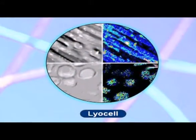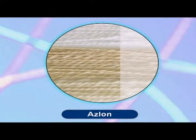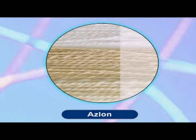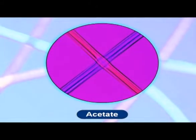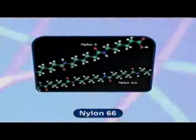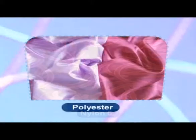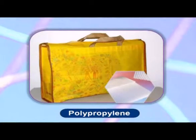Derived from manufactured feedstock: In this category, low molecular weight chemicals are first produced and then converted into fiber-forming polymers through polymerization. Synthetic fibers like polyamides — Nylon-66, Nylon-6 — polyesters, acrylics, and polypropylene are obtained through this route.